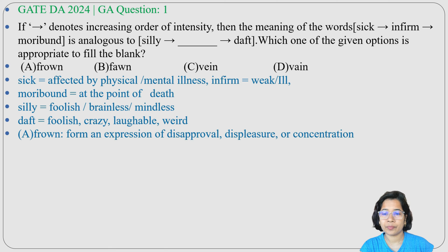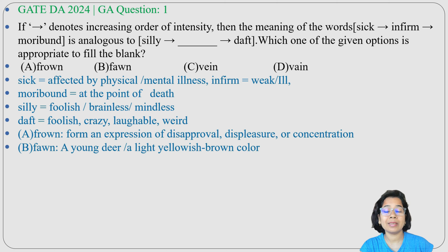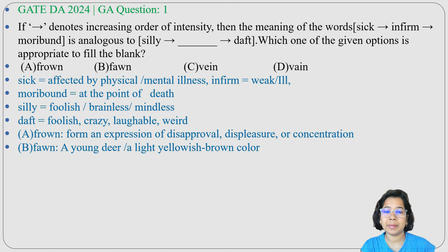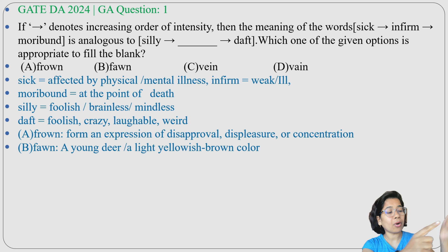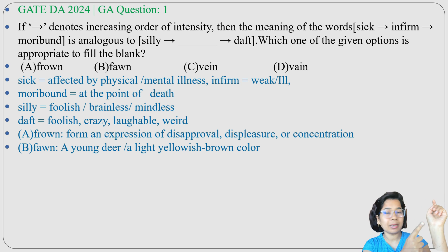Frown cannot be the answer. Next, option B: fawn — fawn is a young deer, a baby deer. Next, option C: vein — vein is what carries blood in our body, transporting blood.